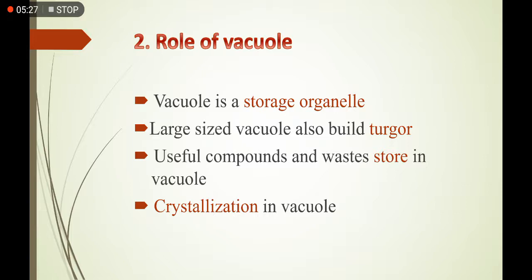Crystallization of these compounds occurs when the vacuole is concentrated by such types of materials. These materials may be useful — for example when the plant is storing food in its fruits, roots, and stems — or they may be waste compounds stored in the vacuoles when they are in excess and toxic for normal metabolism.